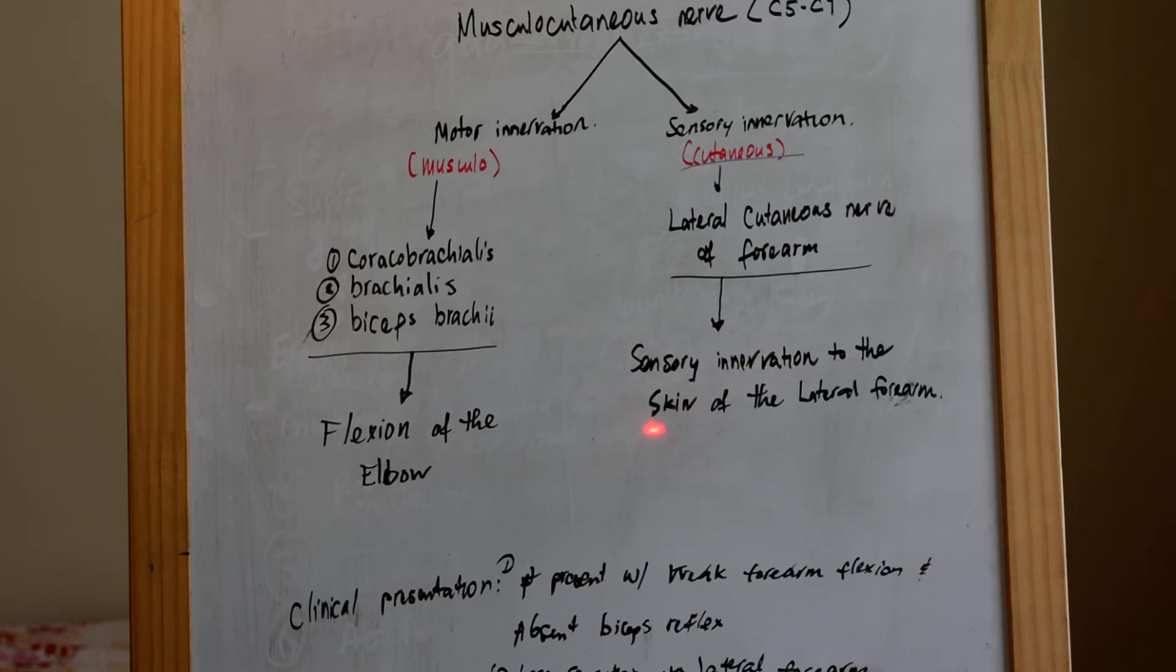Now, the clinical presentations with musculocutaneous nerve damage include weakness in forearm flexion and absence of the biceps reflex. This is the motor component.